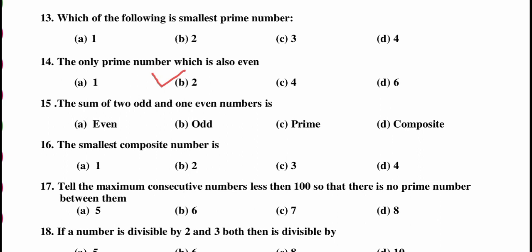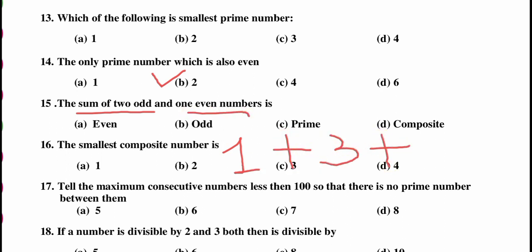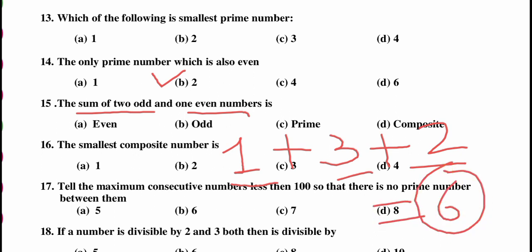Question: the sum of two odd numbers and one even number is — ? Take two odd numbers, for example 1 and 3, and one even number, for example 2. Then 1 plus 3 is 4, and 4 plus 2 is 6. Since 6 is even, the answer is an even number.